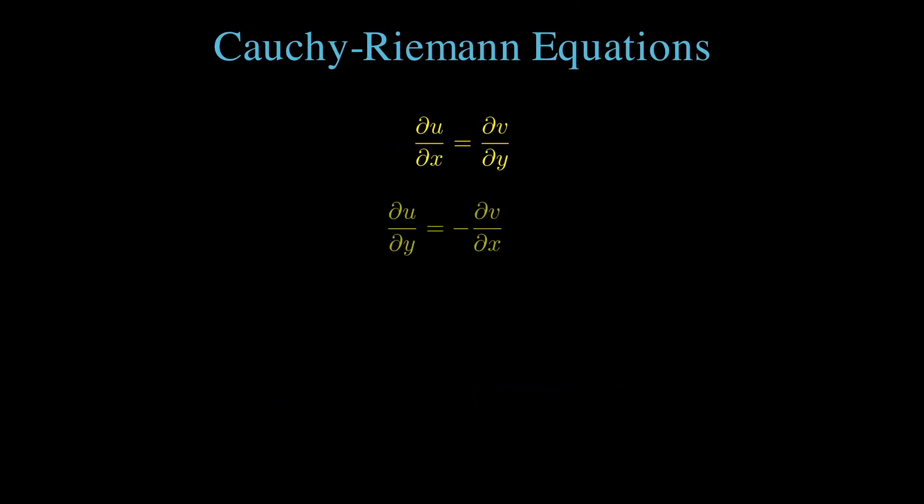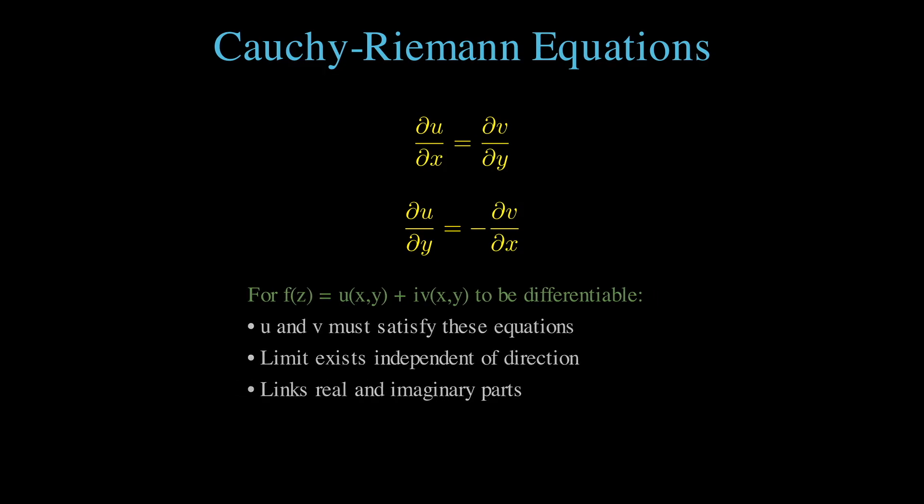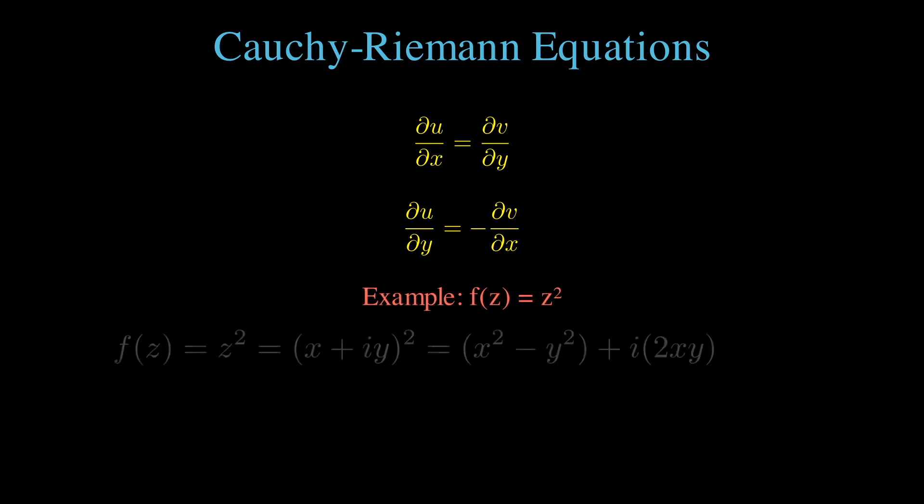In complex analysis, the Cauchy-Riemann equations are the gatekeepers to differentiability. They link the real and imaginary parts of a complex function, ensuring the function behaves nicely.